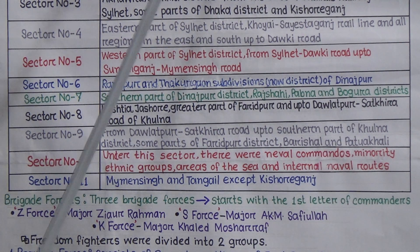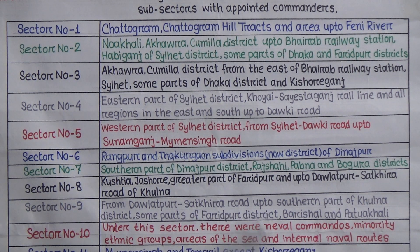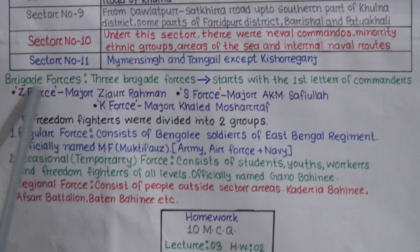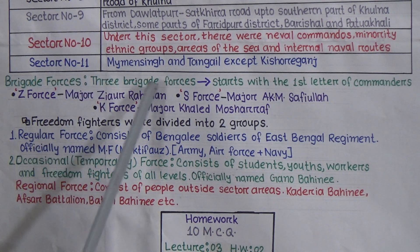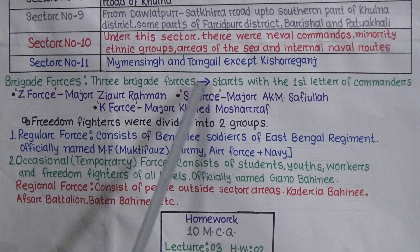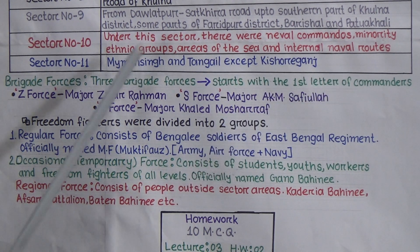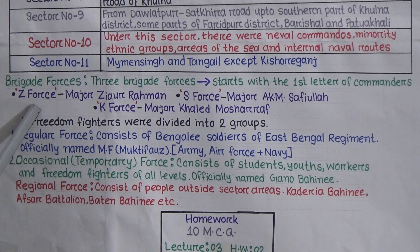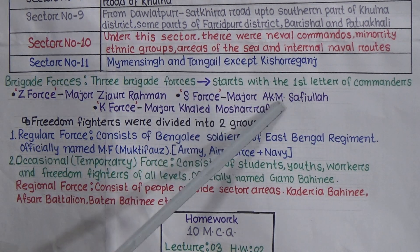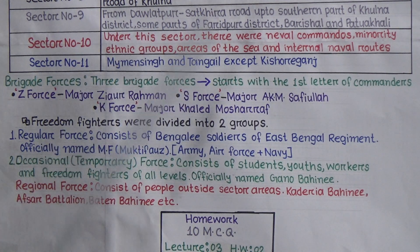Now we are going to learn about Brigade Forces. During the liberation war, there were three Brigade Forces named with the first letter of their commanders: Z-Force, S-Force, and K-Force. Major Ziaur Rahman led Z-Force. S-Force was under Major AKM Shafiullah. K-Force was under Major Khalid Musharraf.